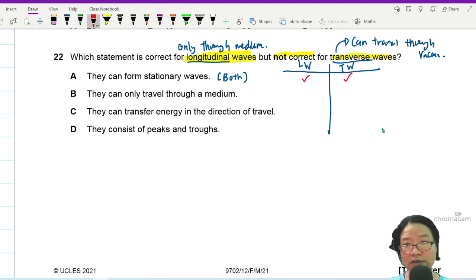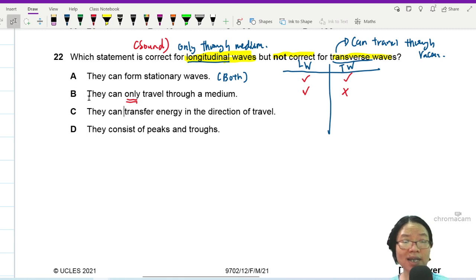They can only travel through a medium. Yes, longitudinal wave, because this one is sound wave, can only travel through a medium. Transverse wave can travel through other things. So no. The word only. If I take away the word only, they can travel through a medium, then both longitudinal wave and transverse wave is correct. So this is how you evaluate the statement.